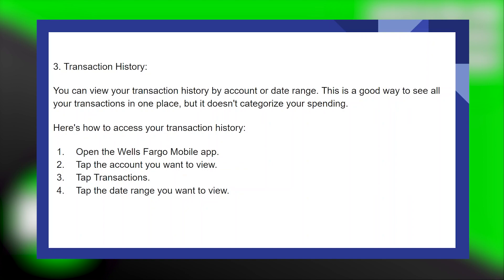Here's how to access your transaction history. Open the Wells Fargo mobile application. Tap the account you want to view. Now tap on Transactions. Then tap the date range you want to view.